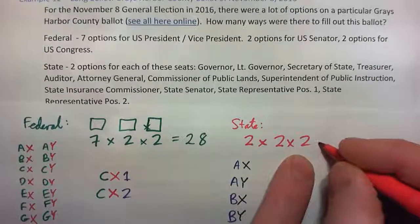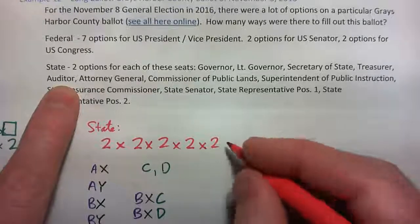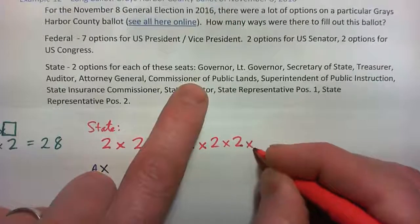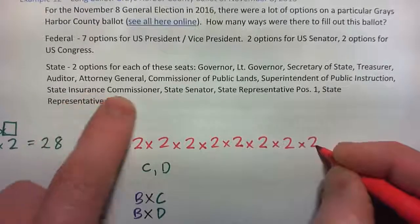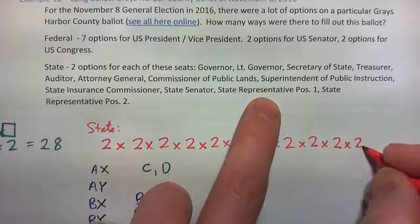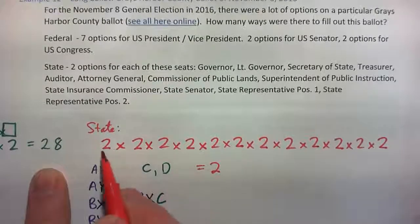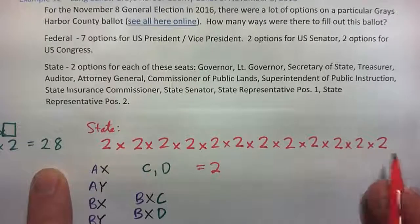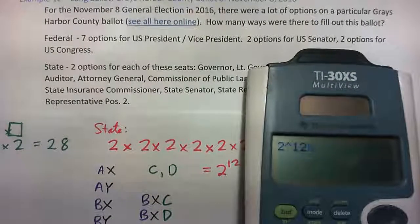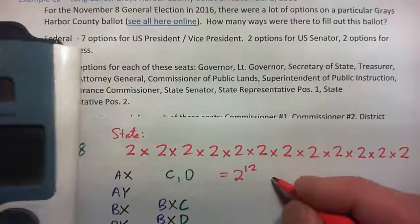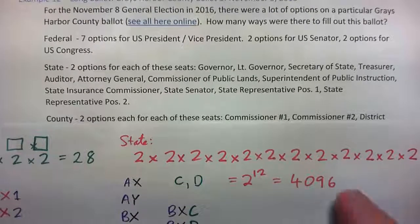And so on for treasurer — two more; auditor — two more; attorney general — two more; public lands — two more; superintendent — two more; insurance — two more; state senator — two more; state rep position one — two more; position two — two more. That makes 2 to the power of 12 state offices. 2^12 = 4,096 ways of filling out just the state options.